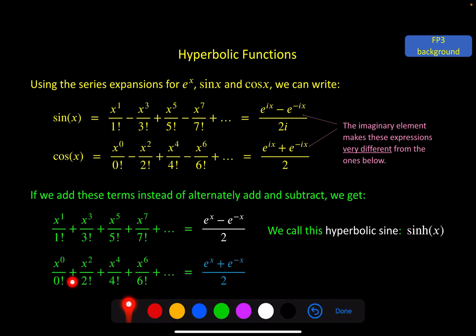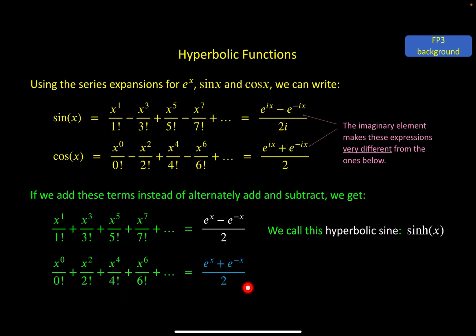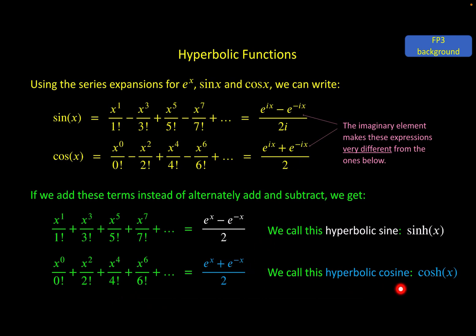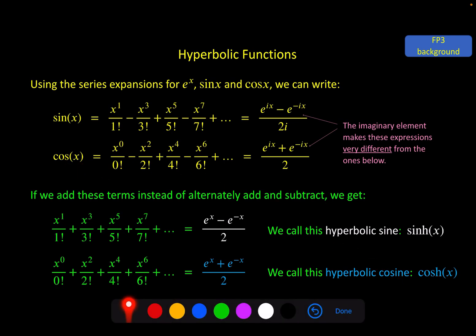Same with the cosine then, if you add all the terms rather than alternating adding and subtracting, you get this expression without any imaginary element and this is called hyperbolic cosine or COSH. So connected yes, very similar, they do have similar names but completely different functions. And we're going to explore what these functions are in this chapter.